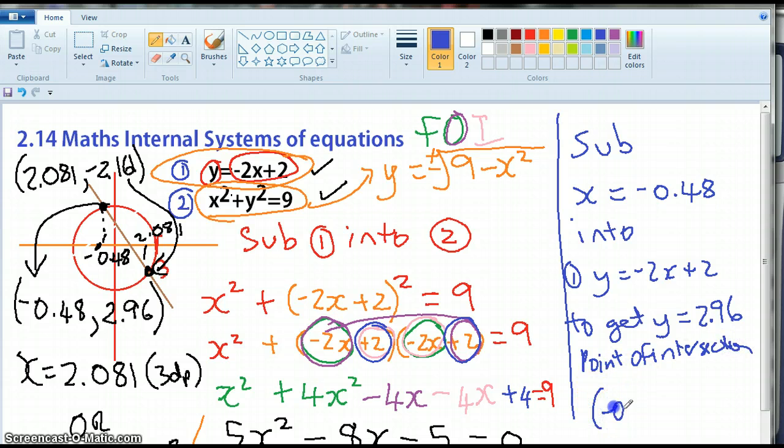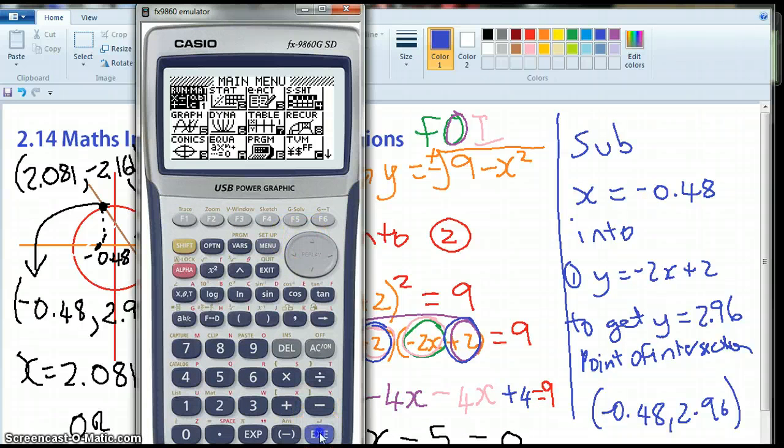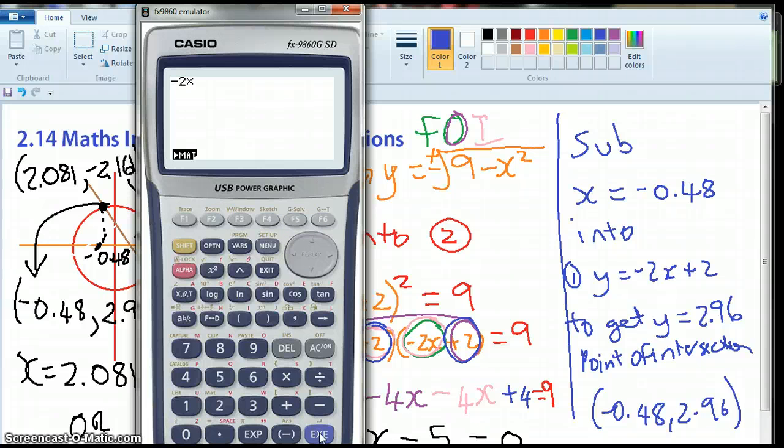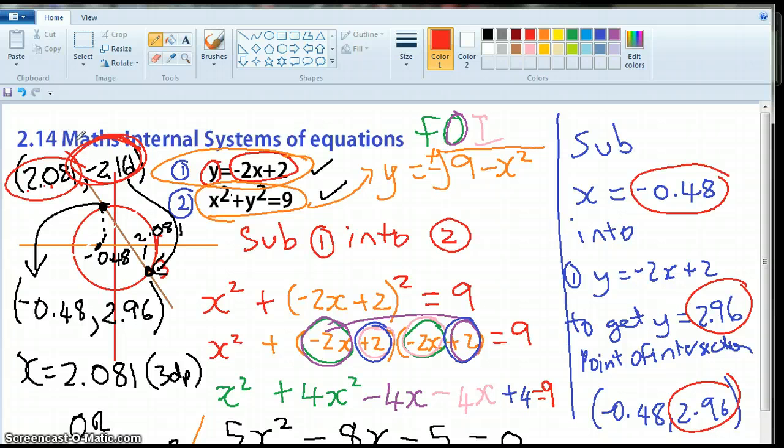is negative 0.48 comma 2.96 and let's just make sure that that works on our little calculator. You could check if you were really quite frightened that you're making silly mistakes. You can go minus 2 times our negative 0.48 plus 2 to get that same answer. So really belts and braces here. Now you have to do the same for the other x coordinate which is this one here so instead of this you would write your 2.081 and instead of that you would write this number and instead of that you would write that number. So you've actually got two points of intersection